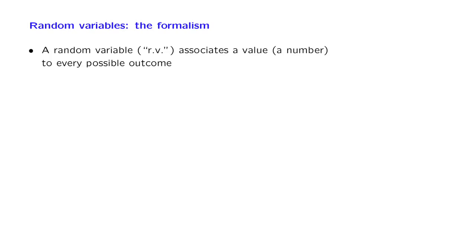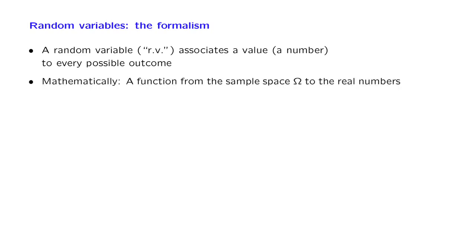Let us now abstract from the previous discussion. We have seen that random variables are abstract objects that associate a specific value — a particular number — to any particular outcome of a probabilistic experiment. So in that sense, random variables are functions from the sample space to the real numbers. They are numerical functions, but as numerical functions, they can either take discrete values — for example, the integers — or they can take continuous values on the real line.